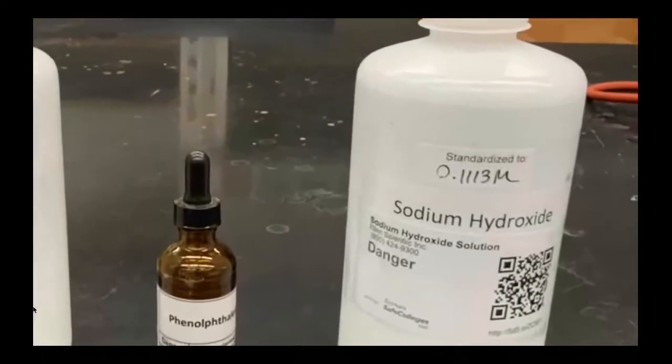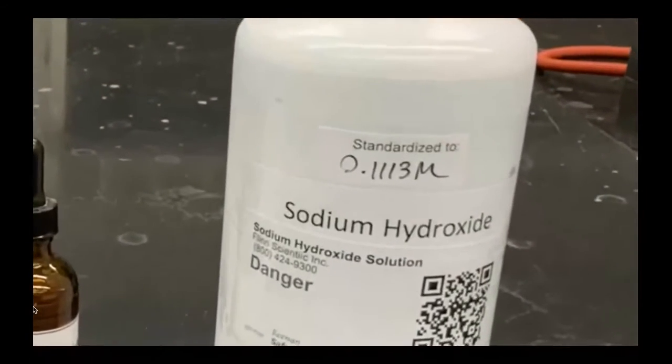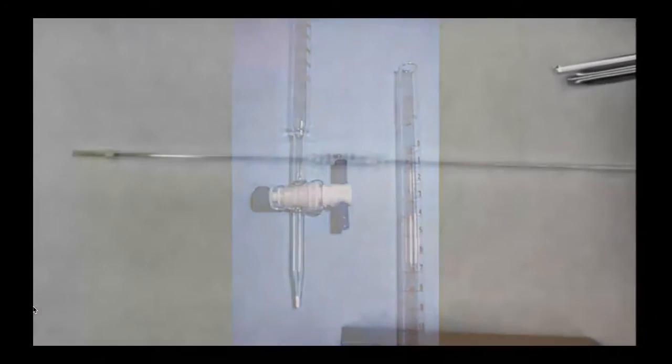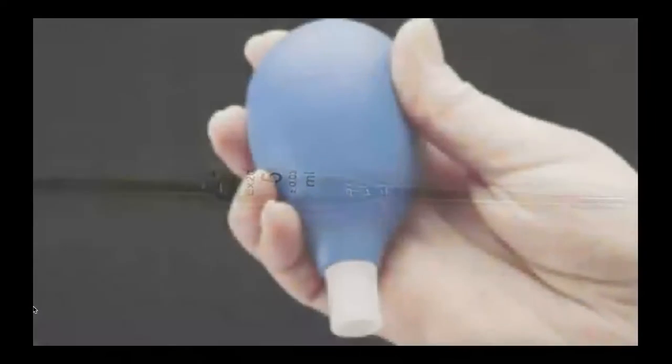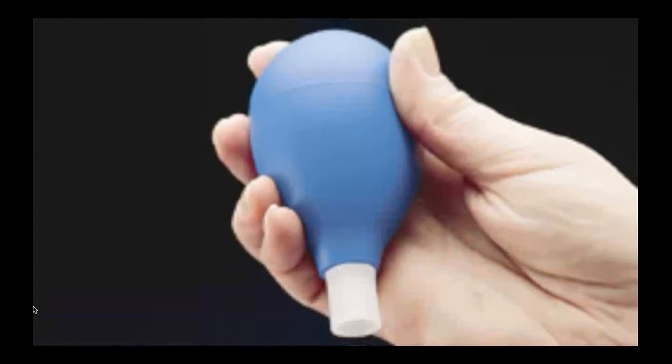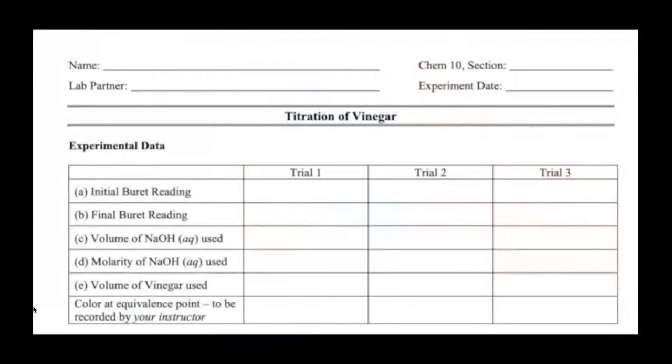Please make note of the concentration of sodium hydroxide: 0.1113 moles per liter. We're also going to use a burette and a 5 milliliter pipette. We also need a suction bulb to draw up the liquid for the pipette.